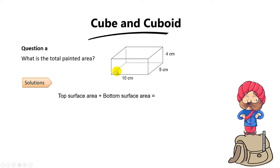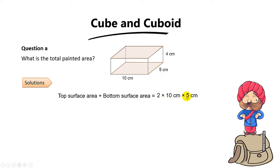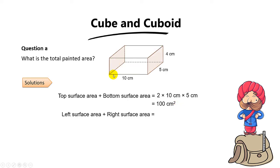The whole surface area consists of the top and the bottom surface area first, which is 2 times 10 times 5 — you get 100cm². Then you have to find the left and the right. The left is 5 times 4, so the left and right will be 2 times 5 times 4 — you get 40cm².